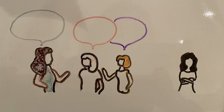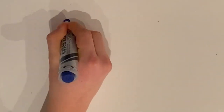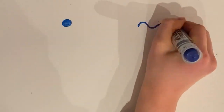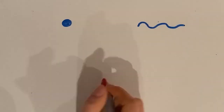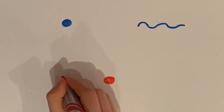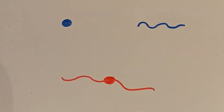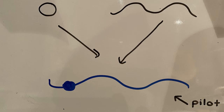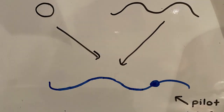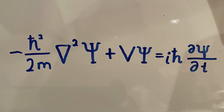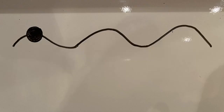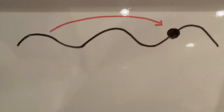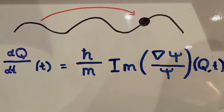This theory says that quantum mechanics isn't comprised of particles or waves, but both combined. Concrete particles with definite locations are guided through space by a wave function dictated by the Schrödinger equation. Changes in the positions of the particles are given by another equation, known as the Pilot Wave equation.